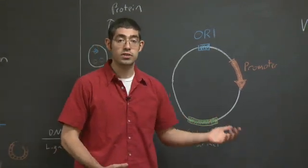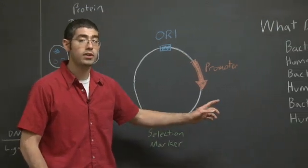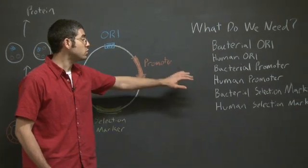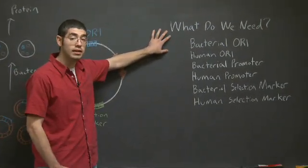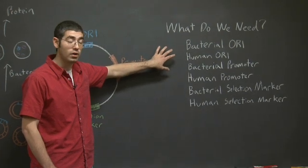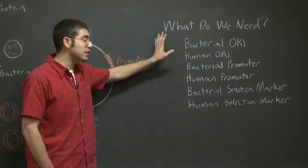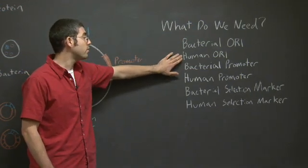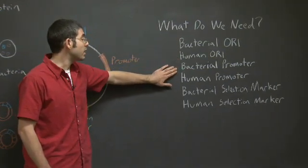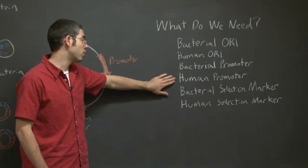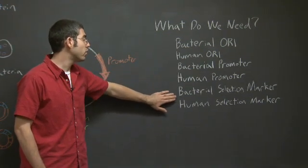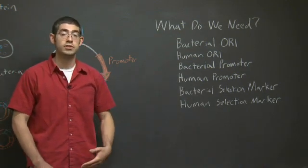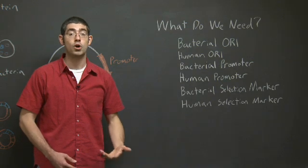So let's go once more to the original example and discuss what we're going to need for our vector. So again, we want to express human insulin in a bacterial system. There are six possibilities for what we can need on our vector. You could need the bacterial ORI, the human ORI, the bacterial promoter, the human promoter, the bacterial selection marker, or the human selection marker. Pause for a minute. I'll give you a chance to decide what you think the vector needs, and then we'll go over it together.